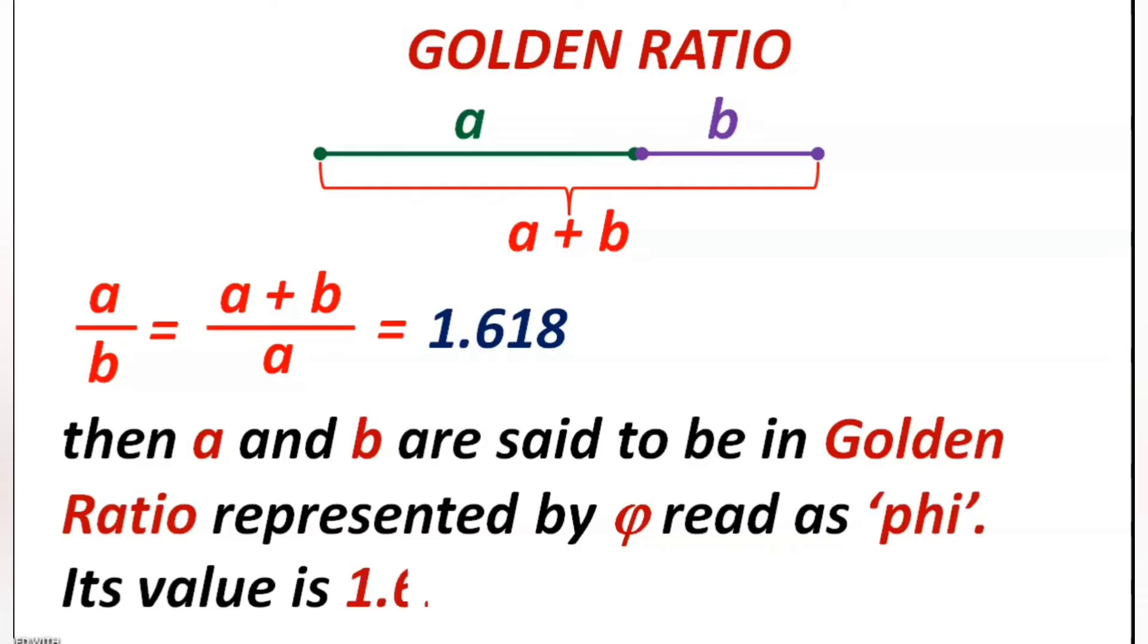It is represented by the Greek letter phi, which is equal to the value 1.618 nearly. It is also called as golden number or golden proportion or the divine proportion.